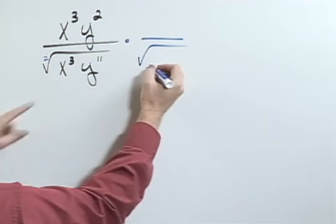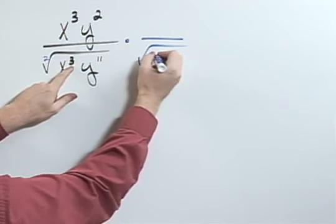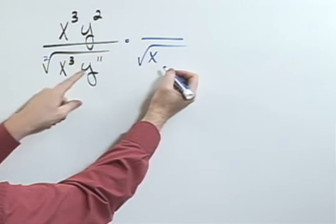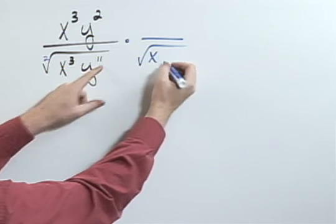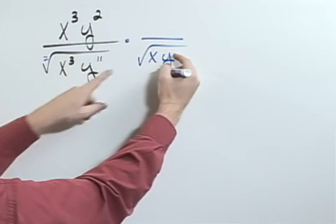So in order to do that, I could get that to be x to the fourth if I multiplied by x, and I could go for y to the twelfth by multiplying by y to the one.